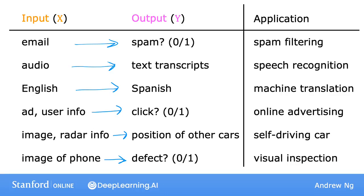In all of these applications, you would first train your model with examples of inputs x and the right answers, that is the labels y. After the model has learned from these input-output, or x and y pairs, it can then take a brand new input x — something it's never seen before — and try to produce the appropriate corresponding output y.